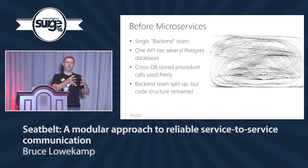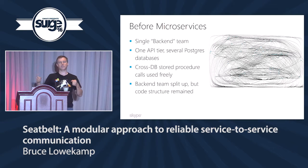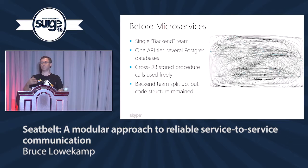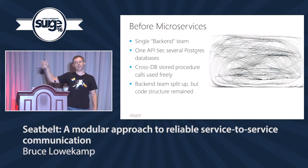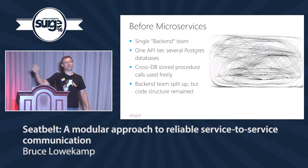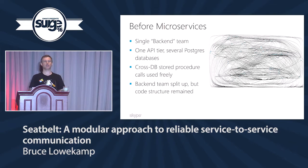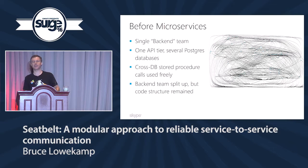Before microservices: Skype had a single back-end team that owned all the databases and front-ends. Since they were one team, any database could call into any other. There's a diagram that looks exactly like this explaining the relationships between our databases. A wonderful person, Preet Kustela in Estonia, spent years unwinding who had which dependencies. We've actually unwound that by now, but this is where we started from.